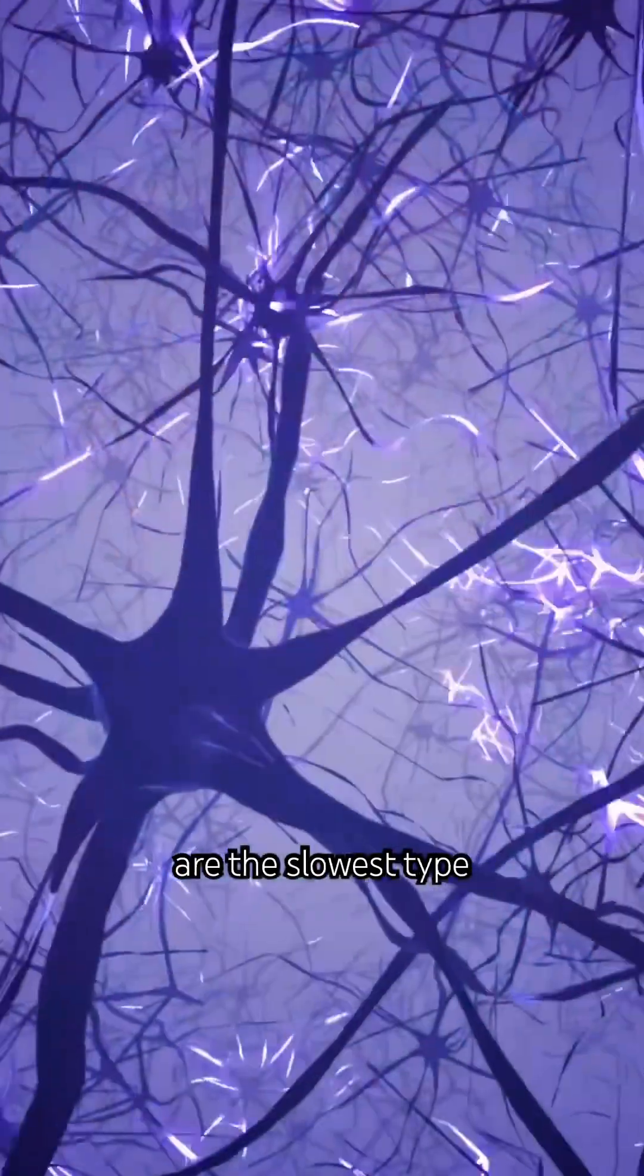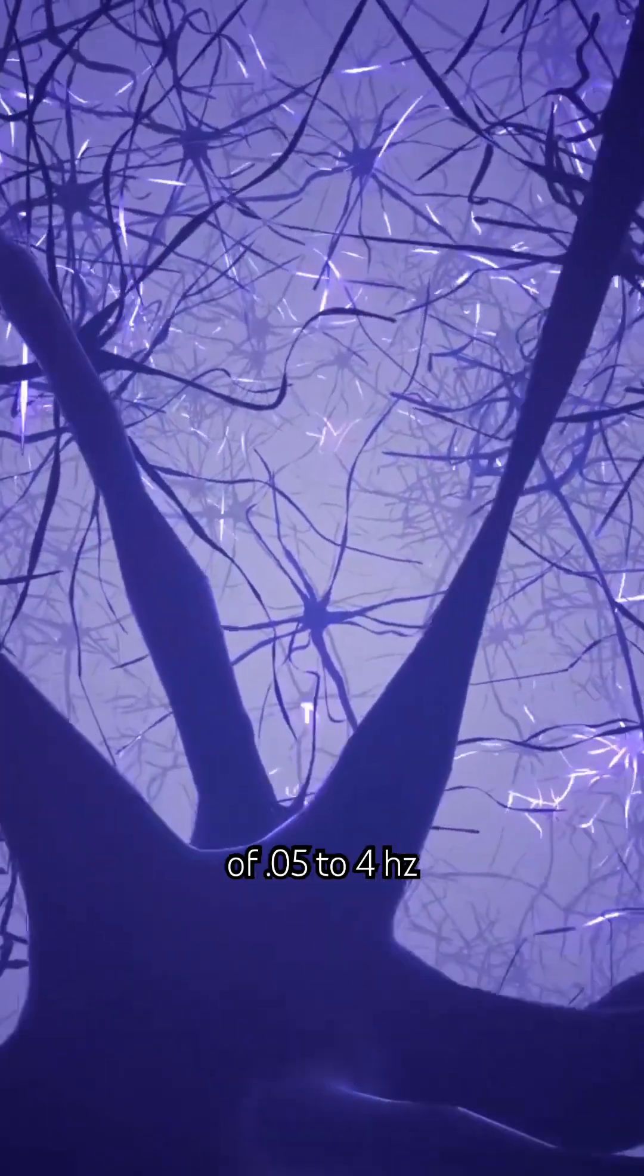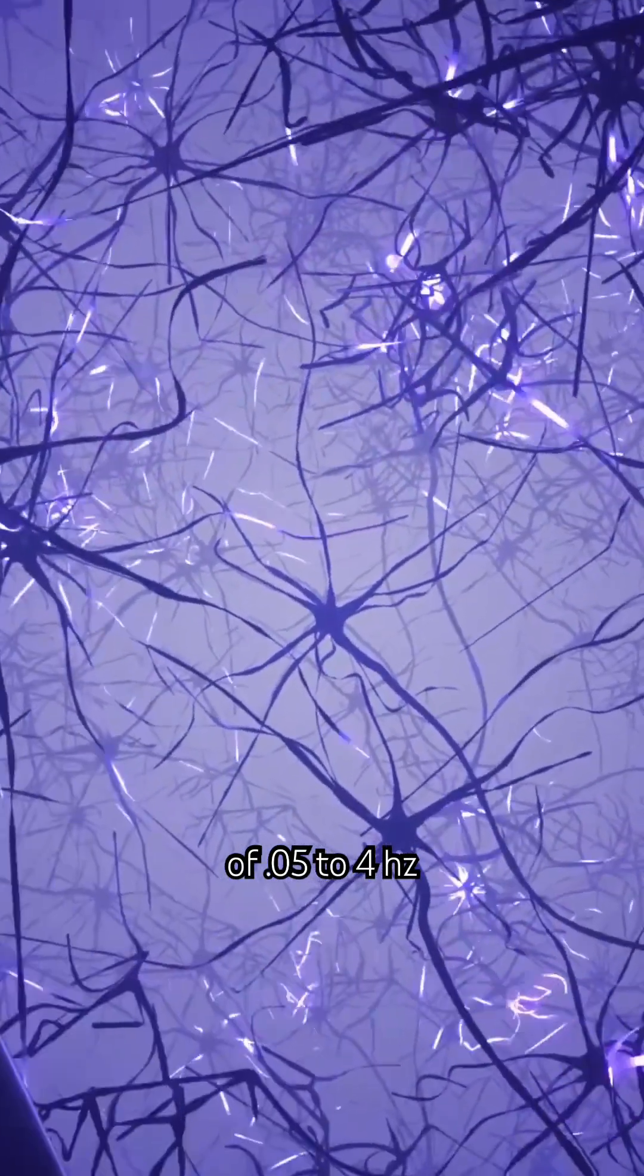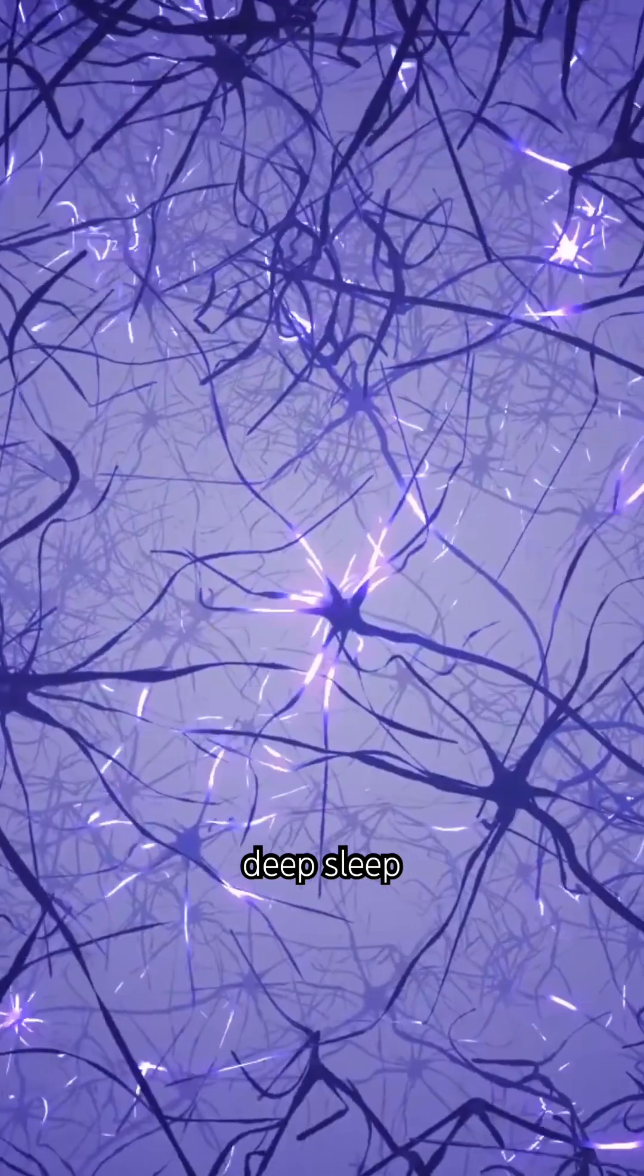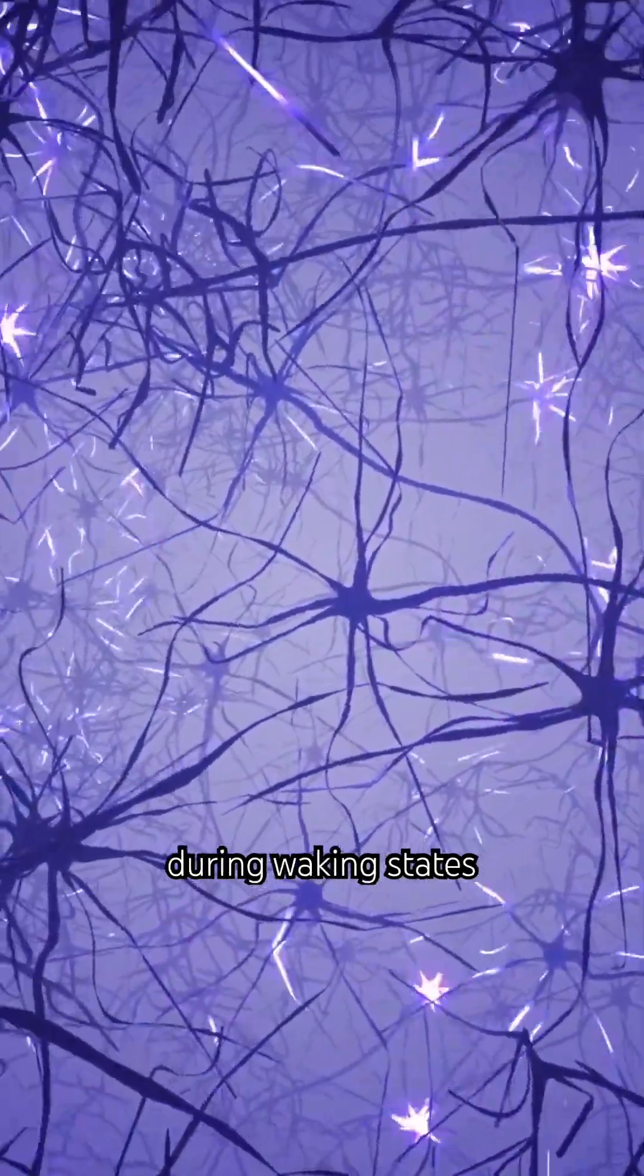Delta waves are the slowest type of brainwaves, and they have a frequency of 0.5 to 4 hertz. They are typically associated with deep sleep and are not present during waking states.